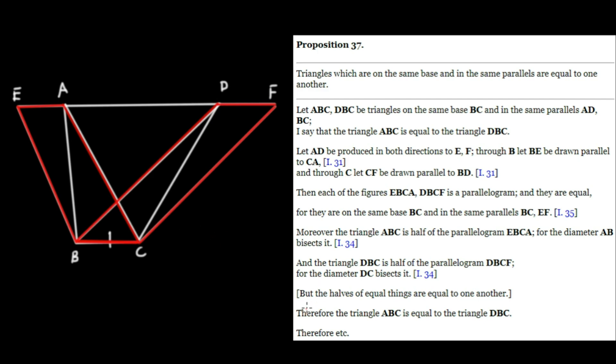But the halves of equal things are equal to one another. Therefore, we have the equality of the triangle ABC and DBC.